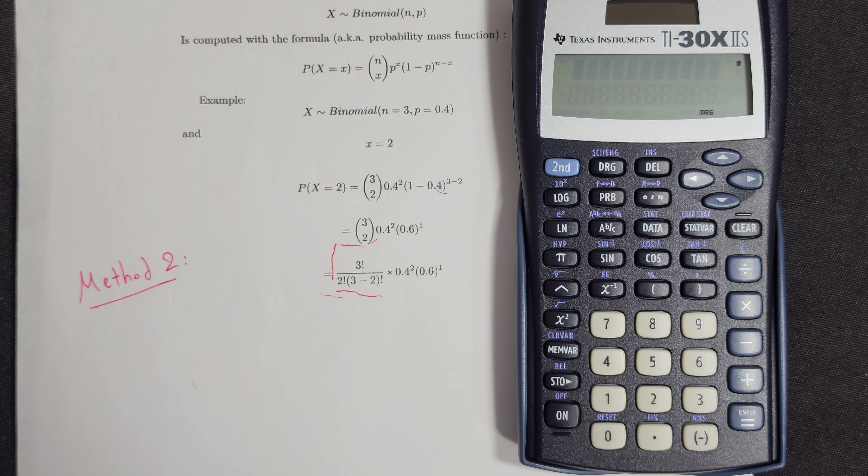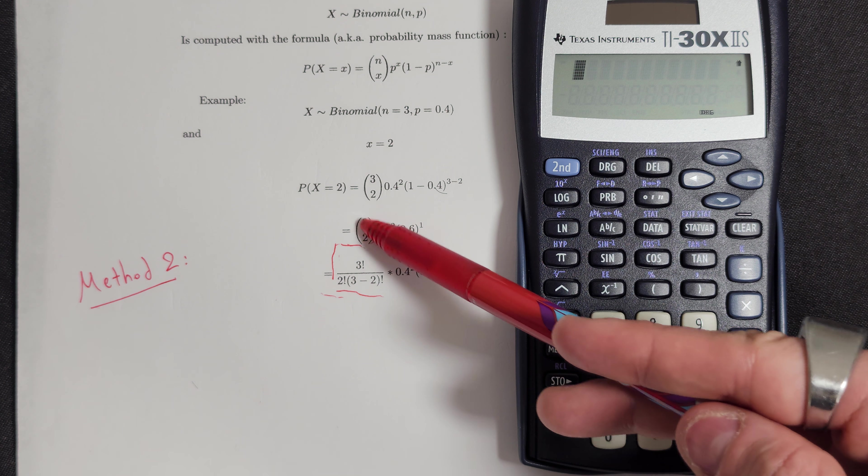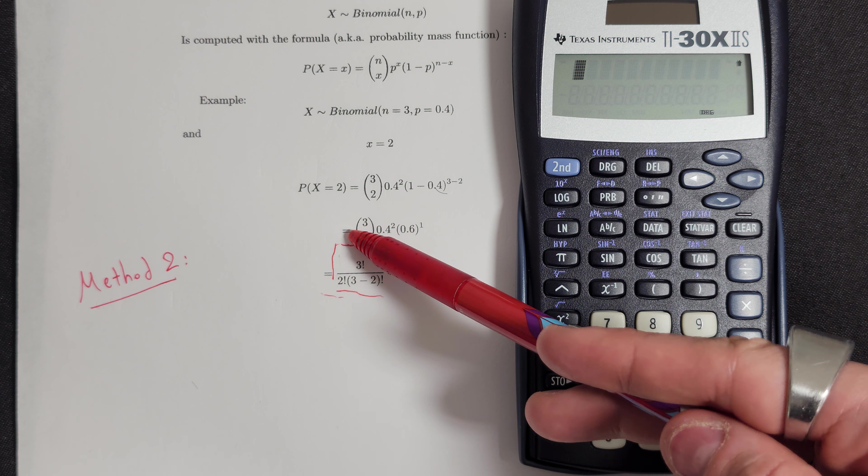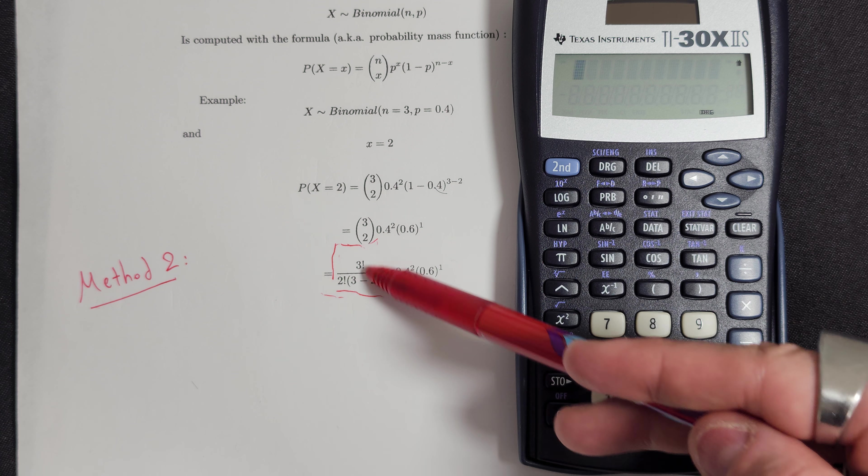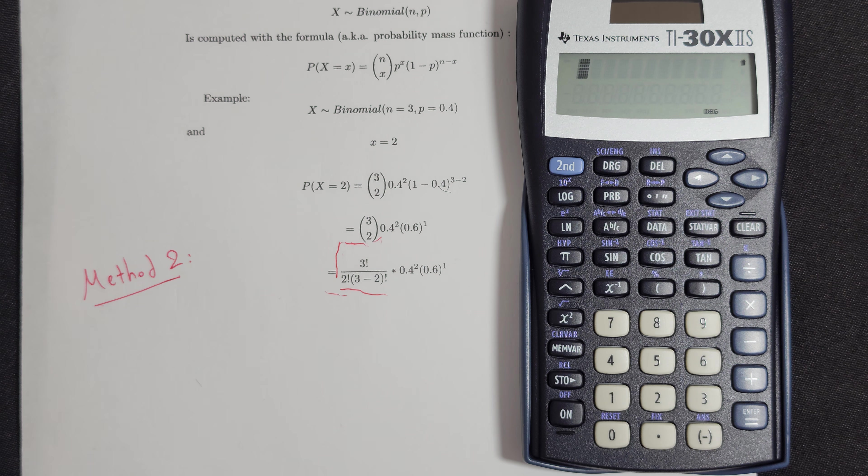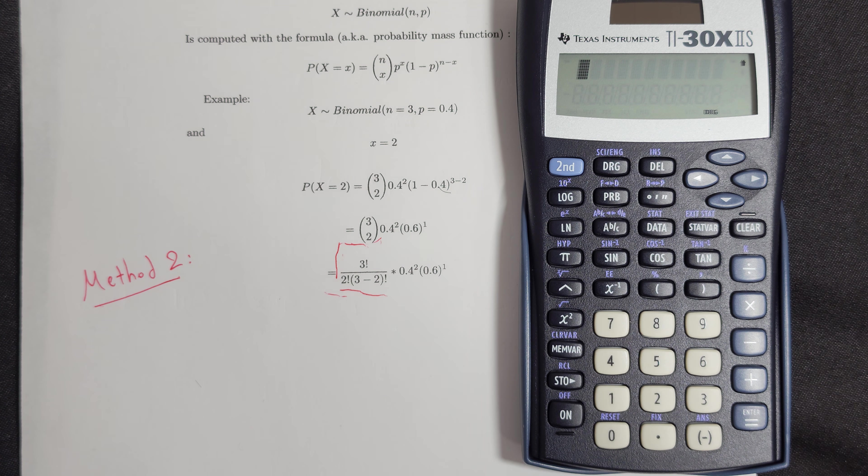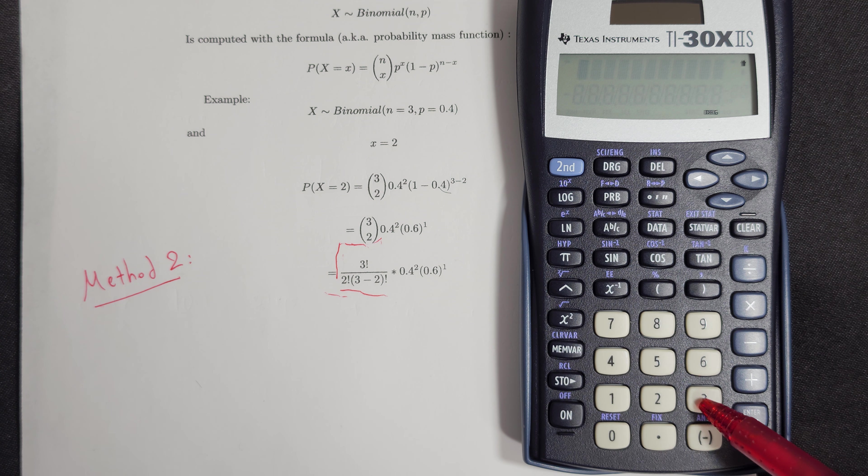Now we'll do the same calculation, but this time we'll use the function of factorials. So we'll write the N choose X, or the 3 choose 2, as this fraction of factorials. So the first thing is to write the number on the top, which is the 3 factorial. We'll first write the 3.